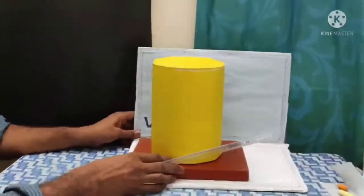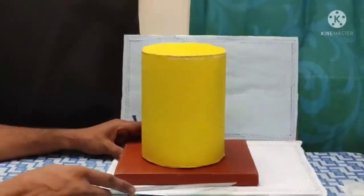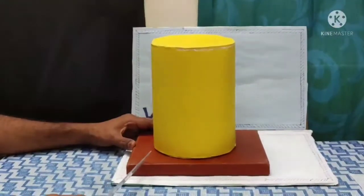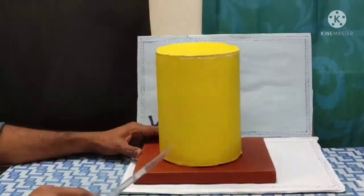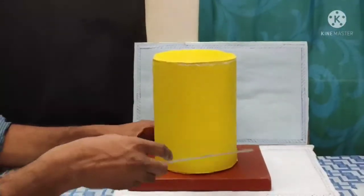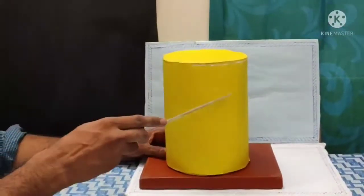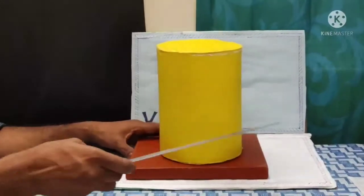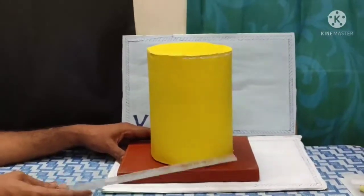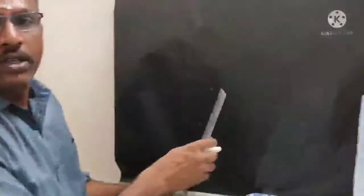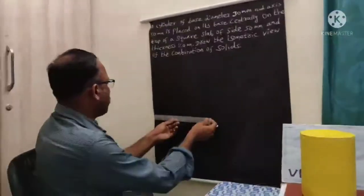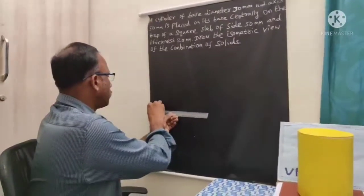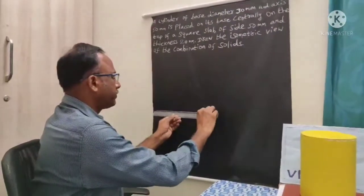The problem is: a cylinder of base diameter 30 mm and axis 50 mm is placed on its base centrally on the top of a square slab of side 50 mm and thickness 20 mm. Draw the isometric view of the combination of solids. Coming to the principal planes, in the bottom we have this square slab which has 50 mm square and thickness is 20 mm. First step: we need to draw the XY reference line, as similar to the projection of solids we studied.